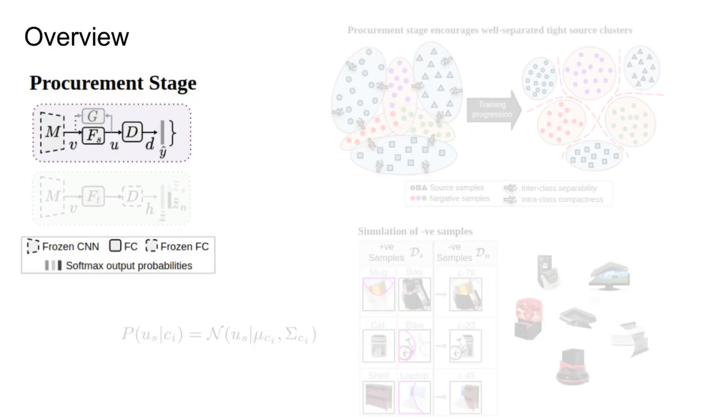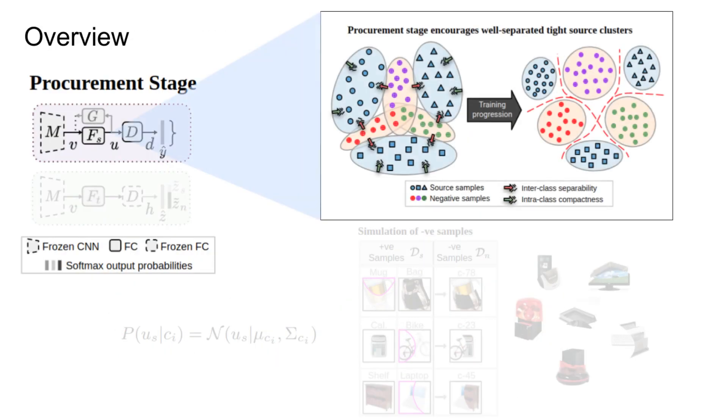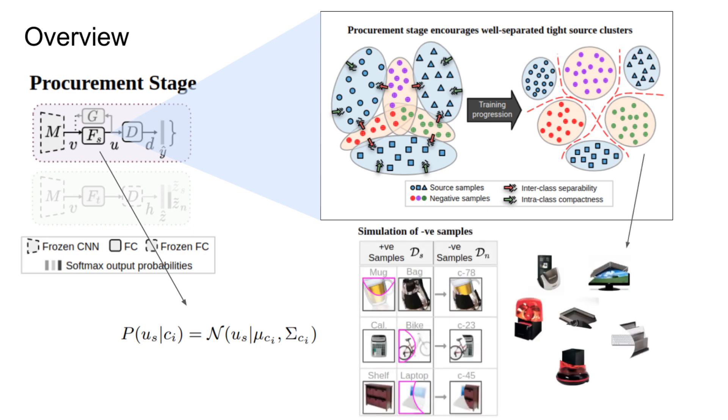Our approach is two-fold. In the procurement stage, we learn well-separated compact source clusters through a generative framework motivated by a variational auto-encoder setup and via synthetic augmentation through image composition.